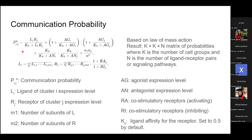They use Hill functions in the equation. K_H is the parameter for the Hill function — it represents the ligand affinity for the receptor. They set it to 0.5 by default.